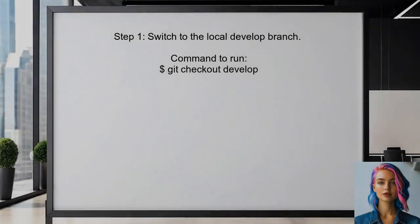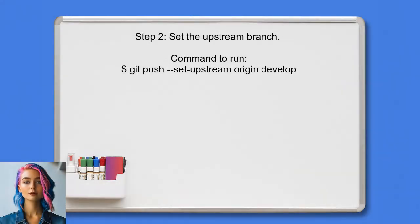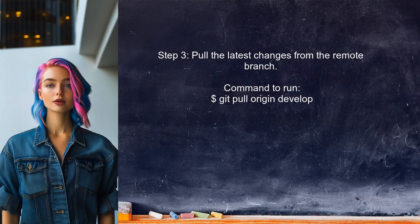To connect the local branch with the remote branch, first ensure you are on the newly created local branch by executing the command to switch to the develop branch. Next, set the upstream branch for your local develop branch using the command that links the local branch to the remote branch. After setting the upstream, you can now pull the latest changes from the remote develop branch.